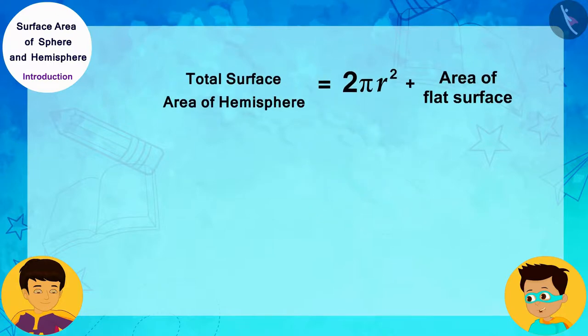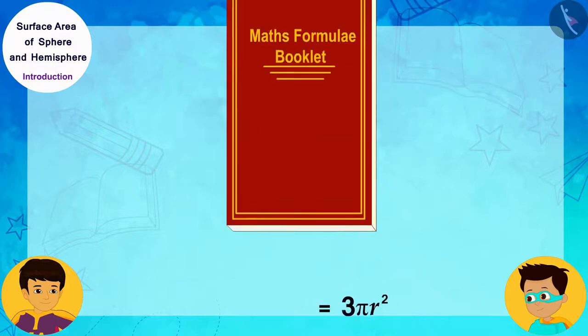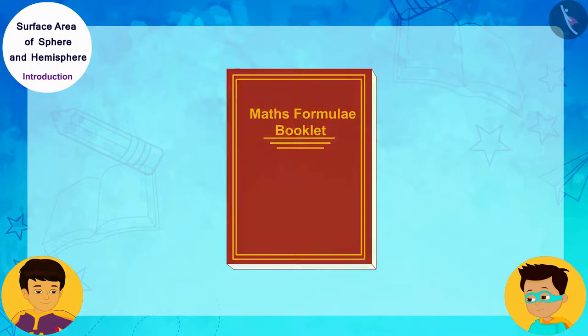And look, if we add the area of the flat surface to the curved surface area of the hemisphere, then we will also know the formula for the total surface area of the hemisphere. In this way, the total surface area of the hemisphere is the product of 3 pi and R square. Let me quickly write these formulae in the formula booklet.